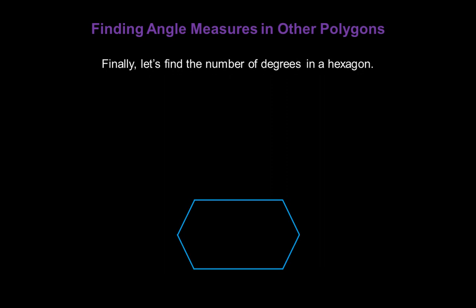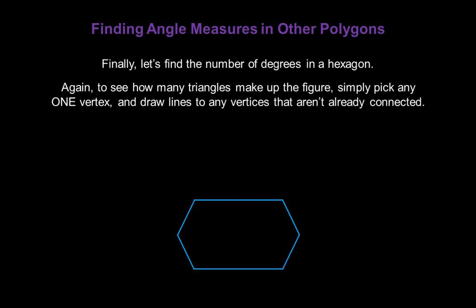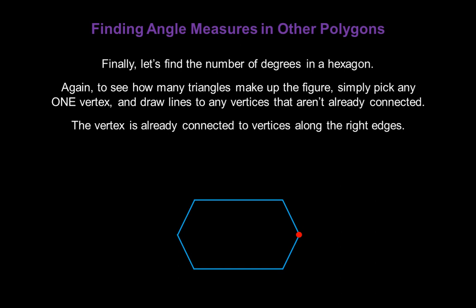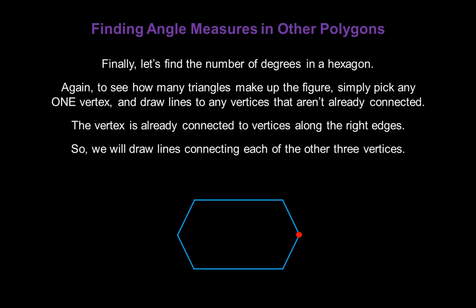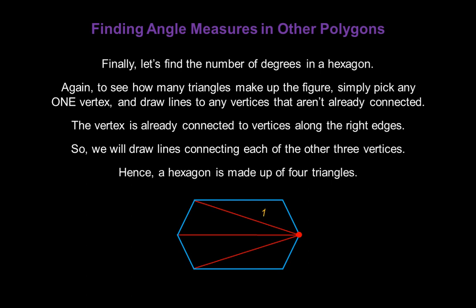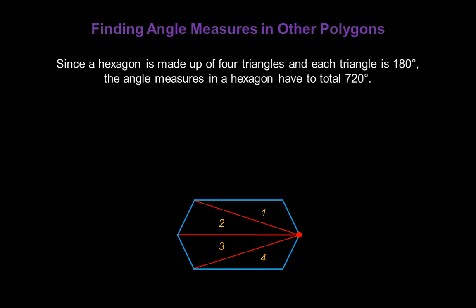Let's do one more — let's find the number of degrees in a hexagon. Pick the vertex farthest to the right and draw lines to any vertices not already connected to it. The vertex is already connected along the right edges, so we draw lines connecting each of the other three vertices, creating four triangles. Since a hexagon is made up of four triangles and each triangle is 180 degrees, the angle measures in a hexagon total 720 degrees.